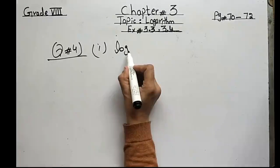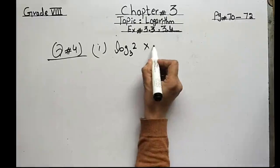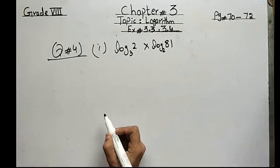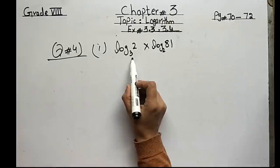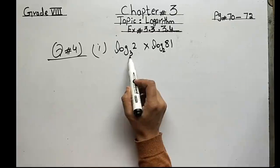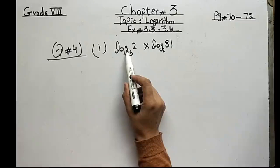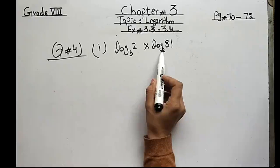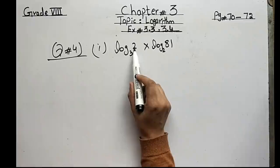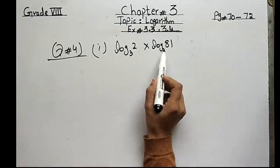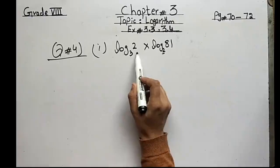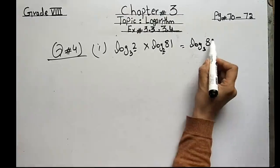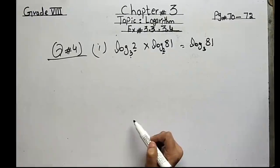Question number 4, first part: calculate log_3(2) × log_2(81). The number in front of the first log and the base of the second log are the same — both are 2. So it can be written as log_3(81).